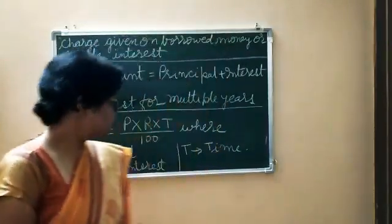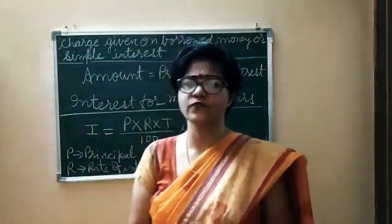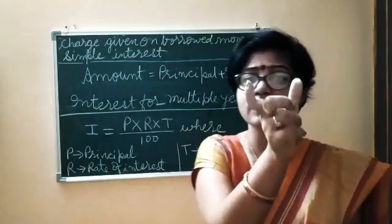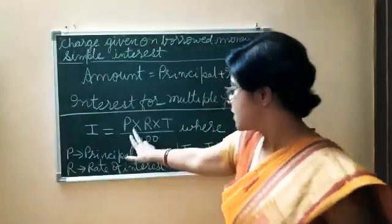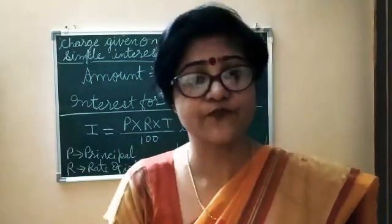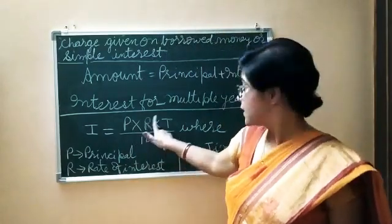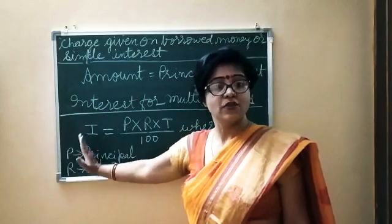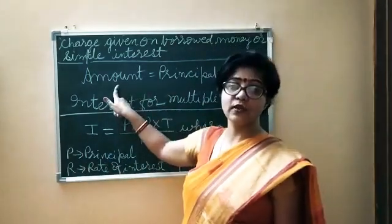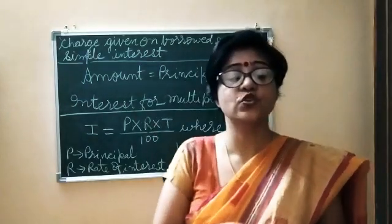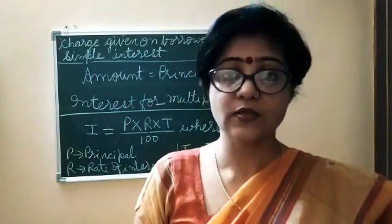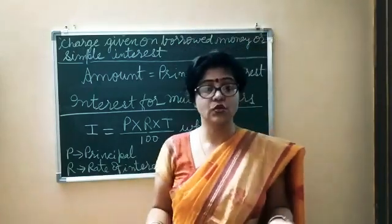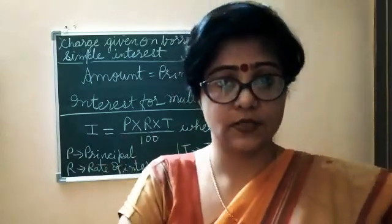Suppose someone wants to buy a mobile phone and takes a loan of rupees 20,000 from the bank for 2 years. So principal is 20,000. The bank says the rate of interest will be 5%, and time is 2 years. Then interest equals 20,000 into 5 into 2 upon 100. Amount is calculated as principal plus interest. The basic amount borrowed is your principal, interest is charged as a percentage, and time is set according to your need or the bank's terms.